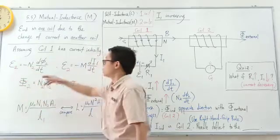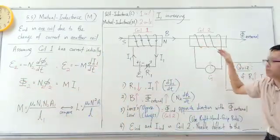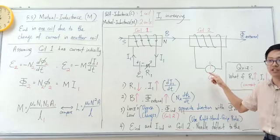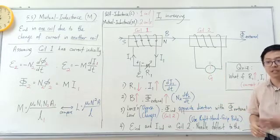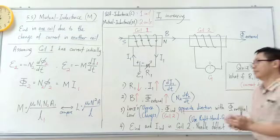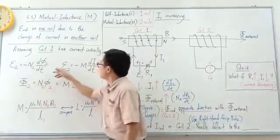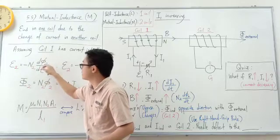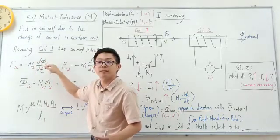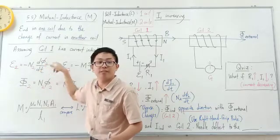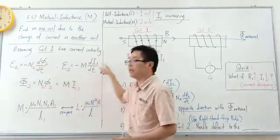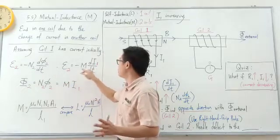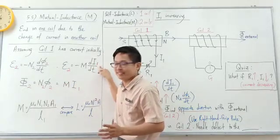EMF is induced in coil two, so there is an induced current passing through the galvanometer. The needle of the galvanometer will deflect in one direction to show the direction of the induced current. So, EMF is induced in coil two due to the change of magnetic flux received, which comes from coil one, because coil one has changing current. Therefore, EMF is induced in coil two due to the change of current in coil one.